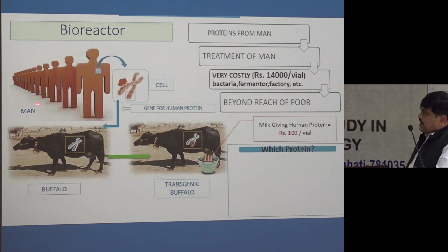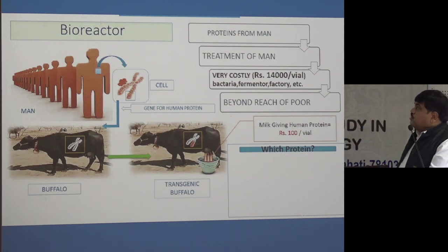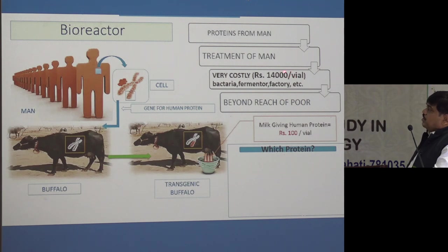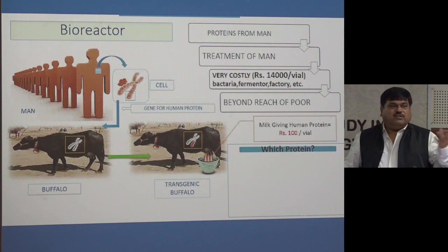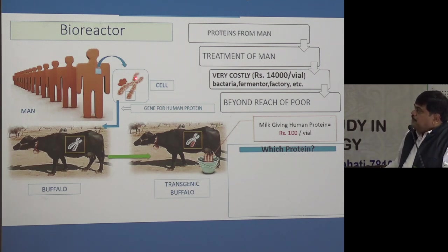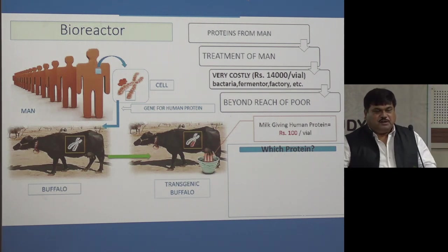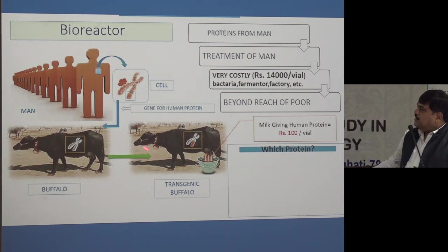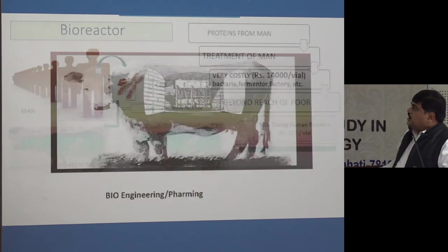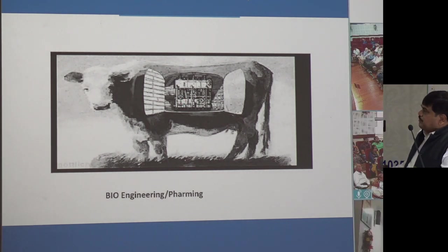During old age, cancer, inflammatory reactions, and autoimmune disorders, the body needs proteins from outside as injections. For example, gamma interferon costs around 14,000 rupees per vial because a human gene is inserted into bacteria, cultured in fermenters, requiring electricity, licenses, labor, and maintenance. Our plan is to take that human gene and make a transgenic buffalo whose udder gland promoter drives human gamma interferon secretion along with milk proteins — making it much cheaper, since the fermenter and factory infrastructure is replaced by natural milk production.